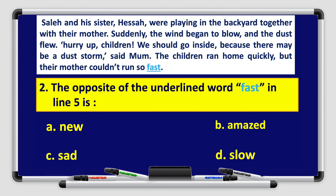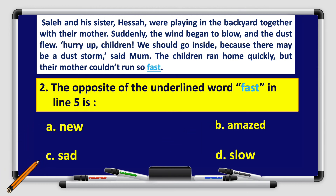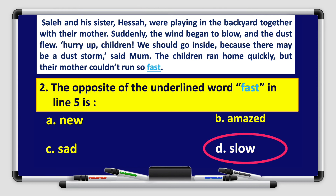Number two: The opposite of the underlined word fast in line number five is A. New, B. Amazed, C. Sad, D. Slow. The children ran home quickly, but their mother couldn't run so fast — we need the opposite of fast. The answer is D, Slow.